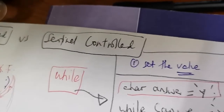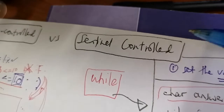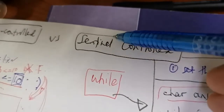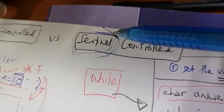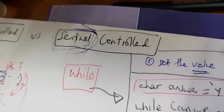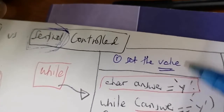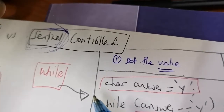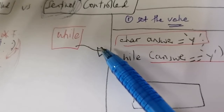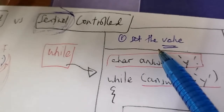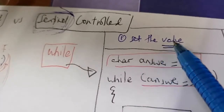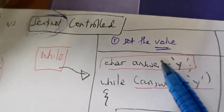Now let's move to sentinel control. What is meant by sentinel? Sentinel means the end value — the last value. So instead of counting repetitions, you do not know the number of times the loop will repeat. The repetition is based on a value, which may be accepted from the user.